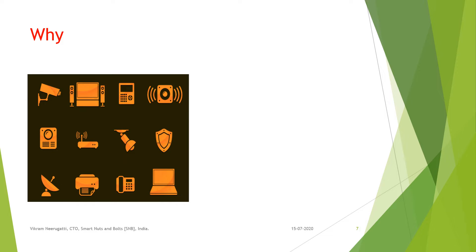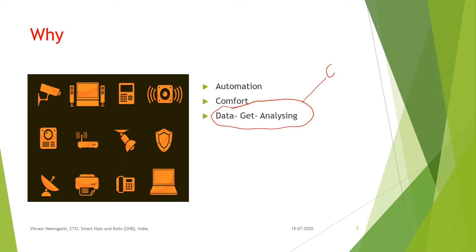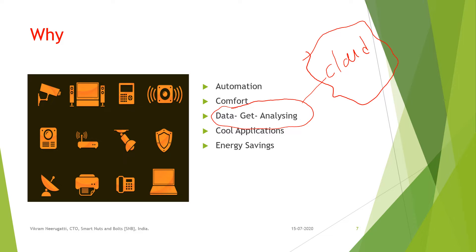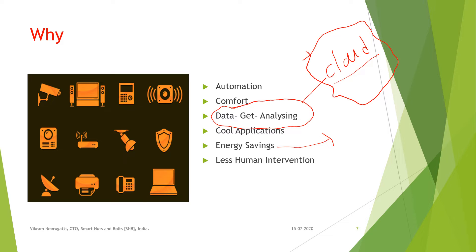So why do we need to connect things to the internet? For automation — without human intervention, things should be done automatically. For example, the garden in front of our house should be automatically watered every morning and evening, and lights and fans should turn on whenever we enter the home. Users develop applications for comfort, and by taking data to the cloud and analyzing it, we can save energy and make better decisions. With IoT, human intervention will be minimal.